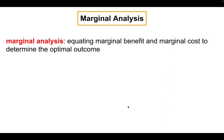So what is marginal analysis? Marginal analysis is equating marginal benefit and marginal cost to determine the optimal outcome — figuring out where marginal benefit equals marginal cost to determine how much of something you should do. If marginal benefit is greater than marginal cost, you should keep going because you're gaining more than it's costing you. But if marginal cost is greater than marginal benefit, you shouldn't do it — for example, if building one more highway costs $500 million but only generates $10 million of additional benefit, you shouldn't build it.